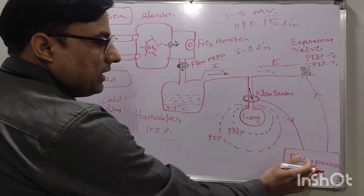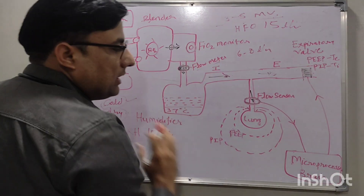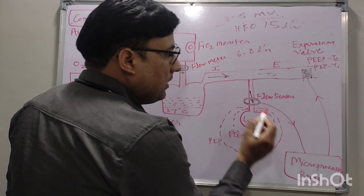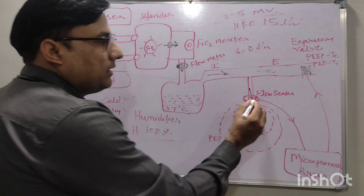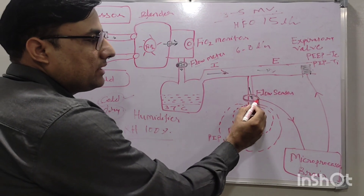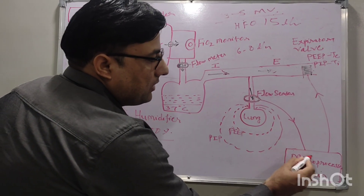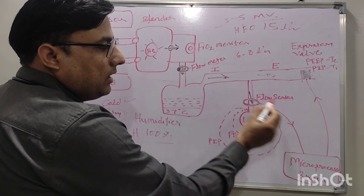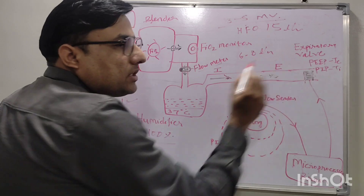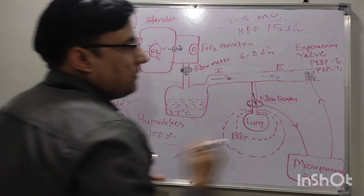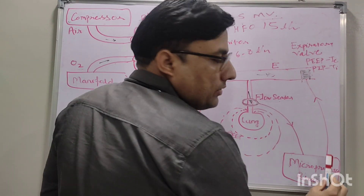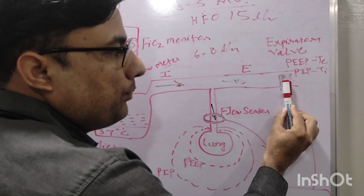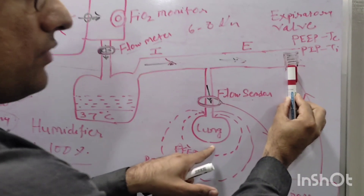The flow sensor gives feedback to the microprocessor — the microprocessor is the brain of the ventilator that decides everything; the algorithm is inside the microprocessor. The flow sensor measures the flow and gives feedback to the microprocessor, detects spontaneous breathing of the baby, and also acts as a trigger. It detects spontaneous breaths and gives feedback to the microprocessor, which then instructs the expiratory valve to deliver a breath. When the microprocessor gives a signal, the expiratory valve closes, creating resistance, and PEEP is delivered.